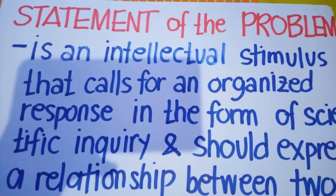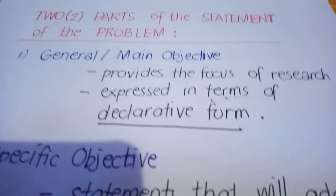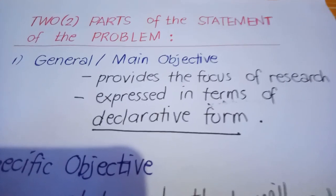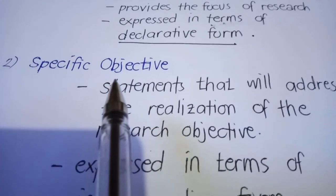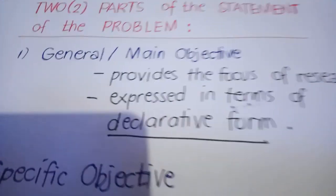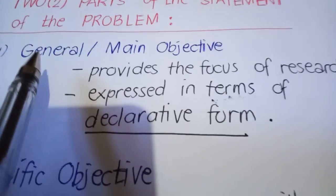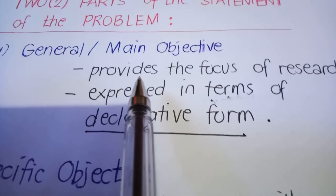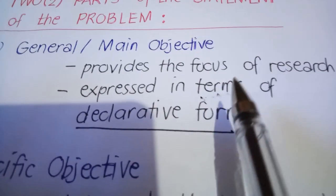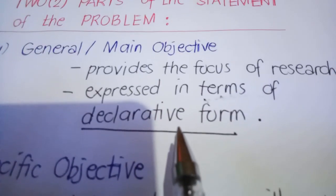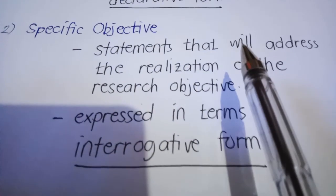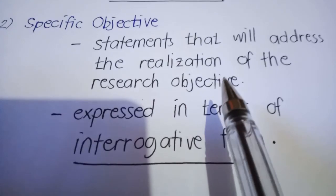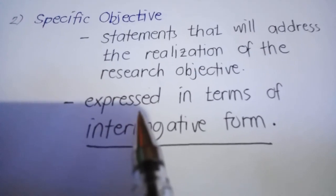Let's start with the general statement of the problem. There are two parts of the statement of the problem: the general statement of the problem or main objective, and the specific statement of the problem or specific objective. The general statement of the problem provides the focus of research expressed in declarative form. On the other hand, the specific objective consists of statements that address the realization of the research objective, expressed in interrogative form.